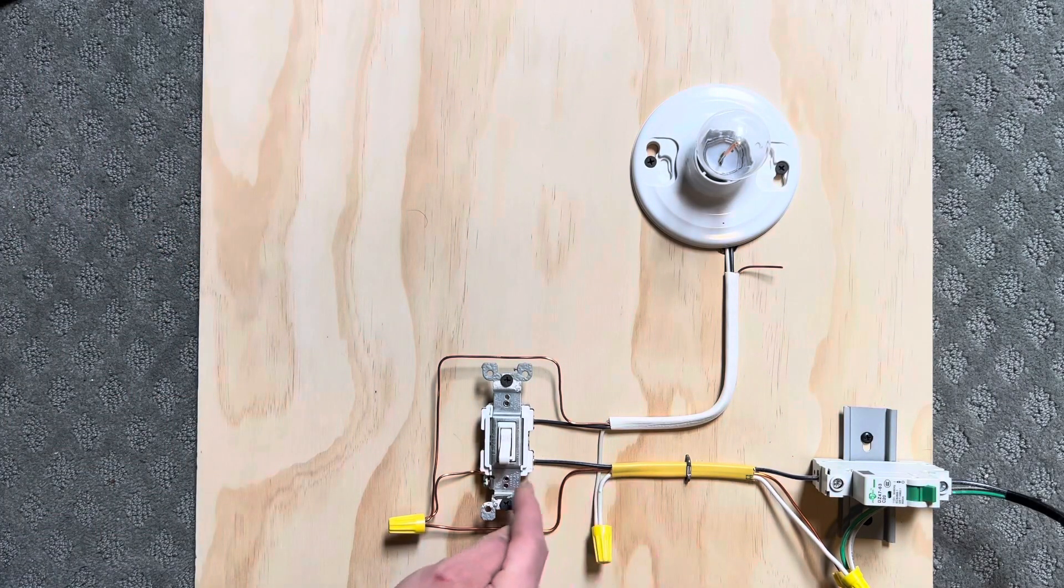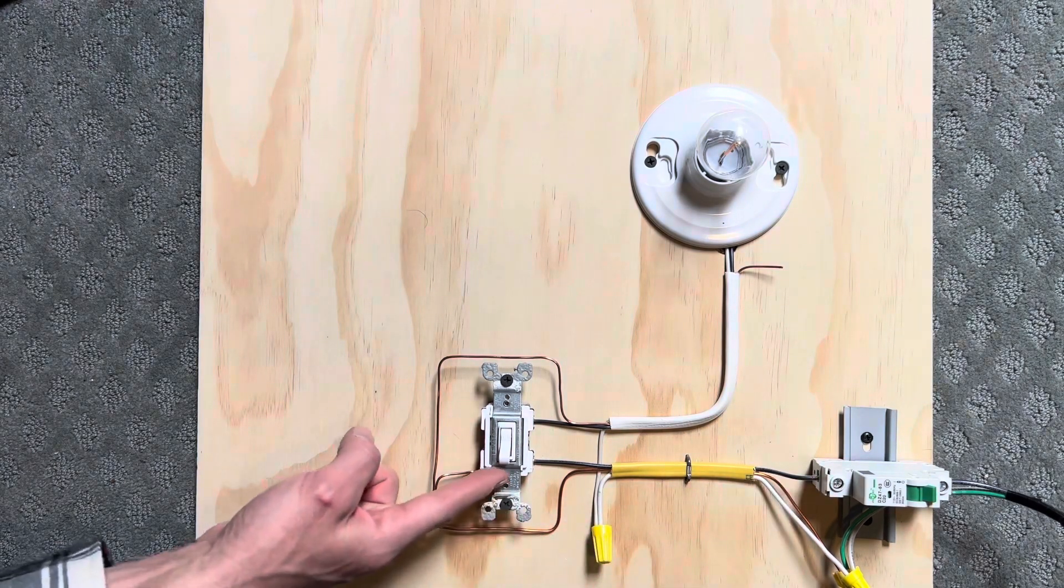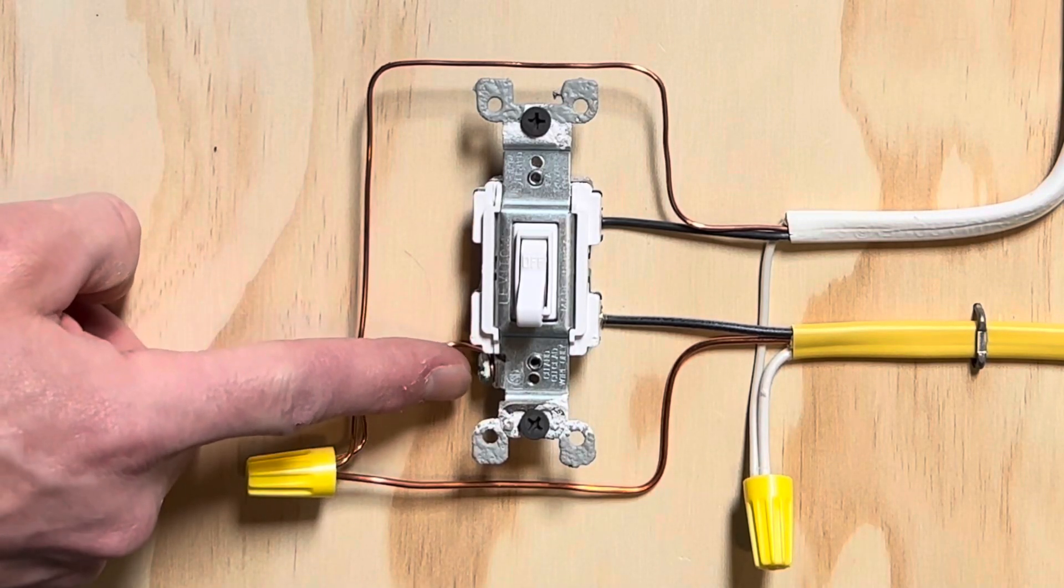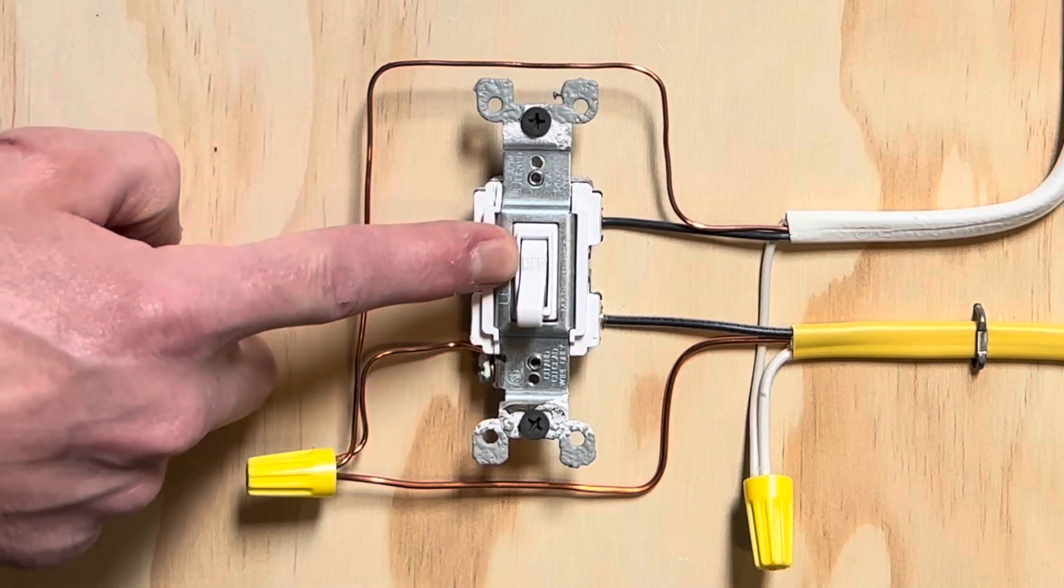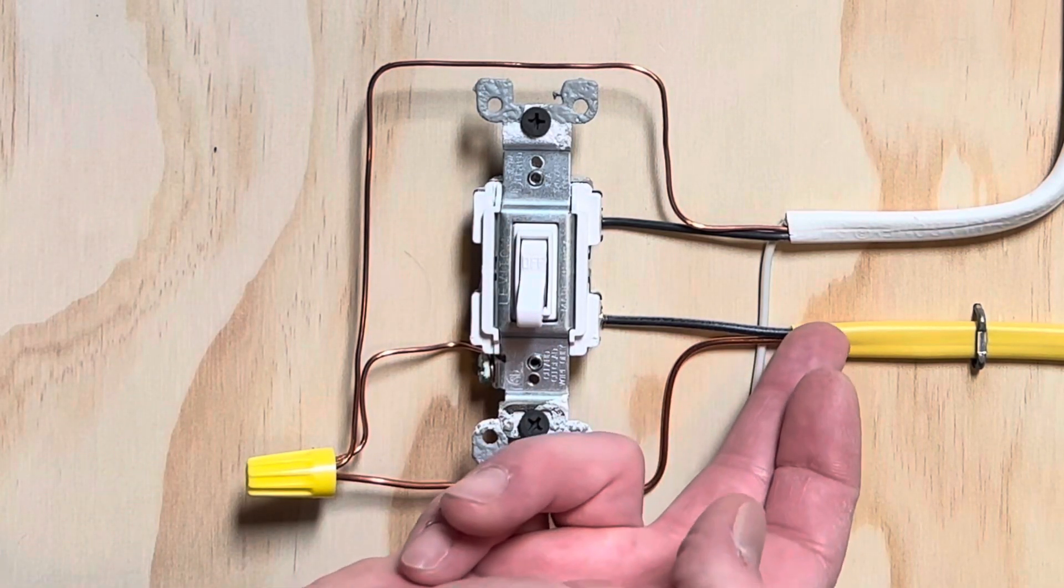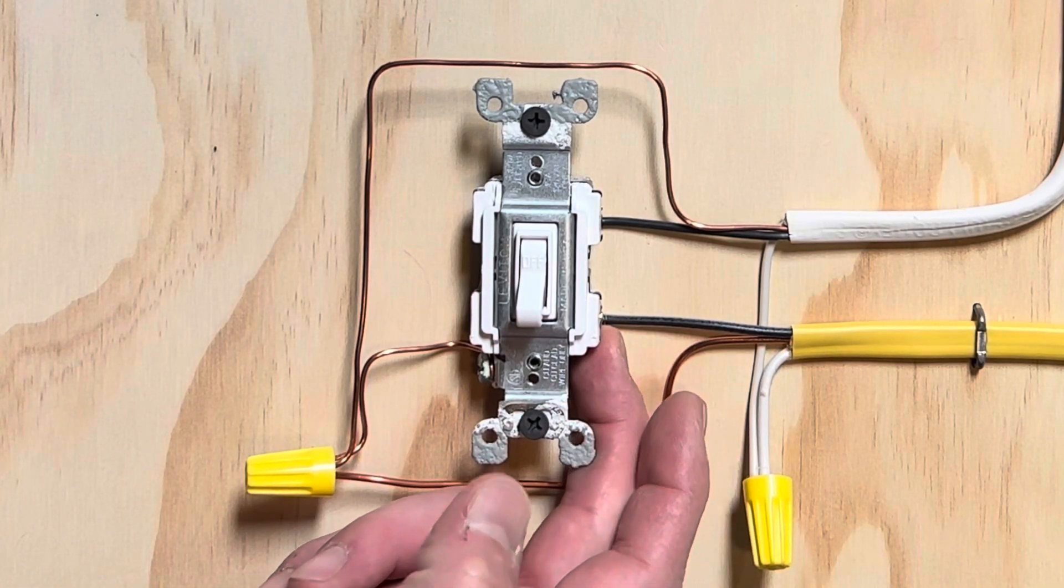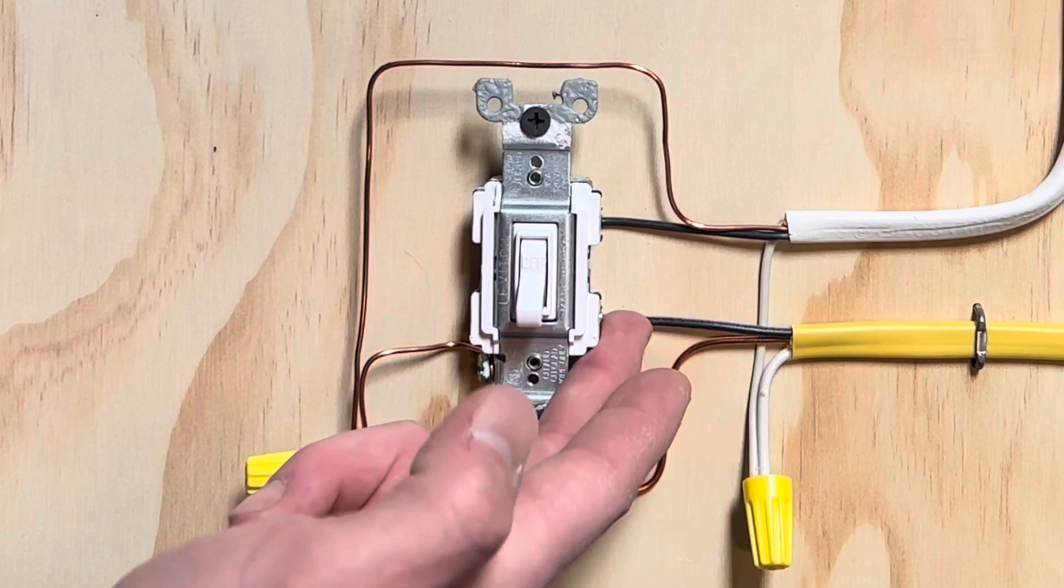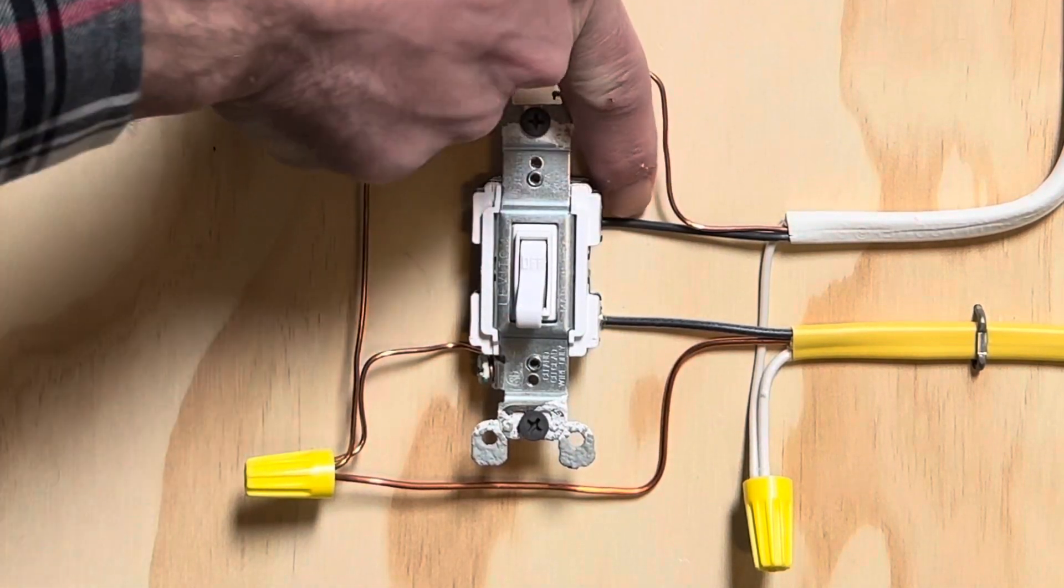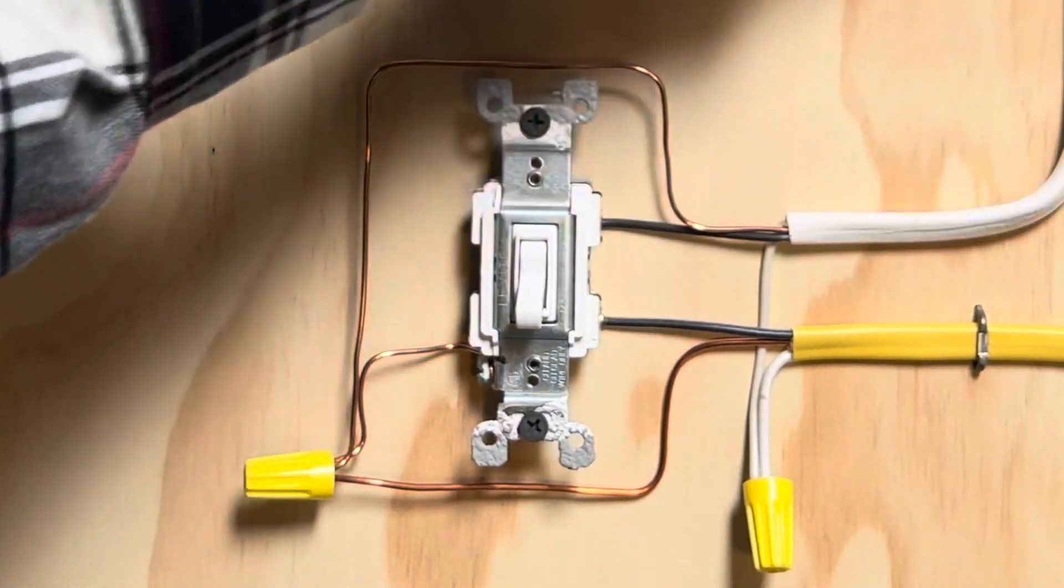As for how this hooks up, you have your black coming from your circuit breaker going into the bottom of your switch. I depict bottom as where my ground screw is on my switches. Also, off is typically in the down position. My black comes on the first brass screw on the bottom - that's your line. Your power going out of the switch is on your load, which is another brass screw on the top. That goes out to your light.